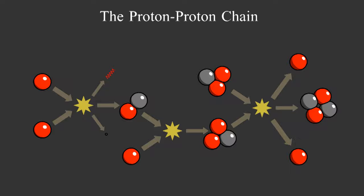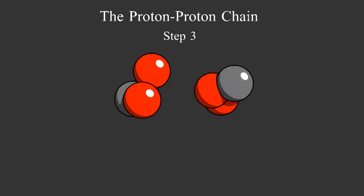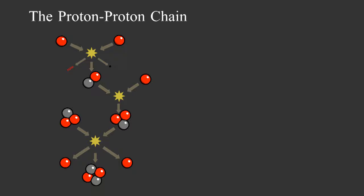This is a series of three nuclear reactions. First, we smash two protons together and one of the protons turns into a neutron through beta decay. The result is hydrogen-2. Second, we add a proton to make helium-3. Third, we smash two helium-3 nuclei together to make helium-4.